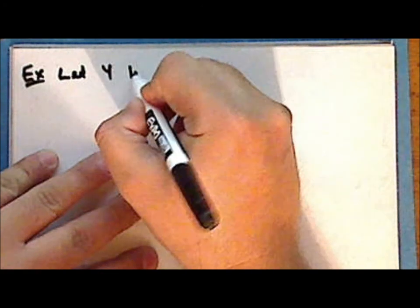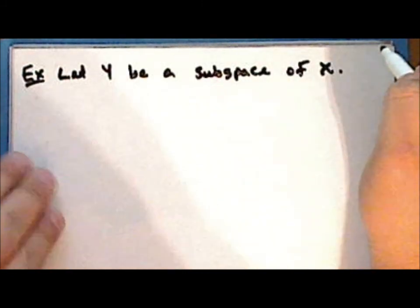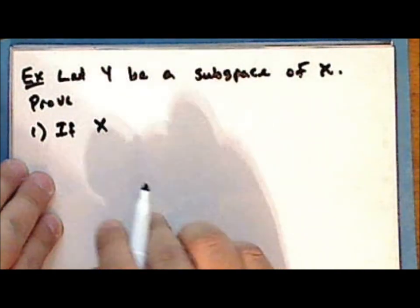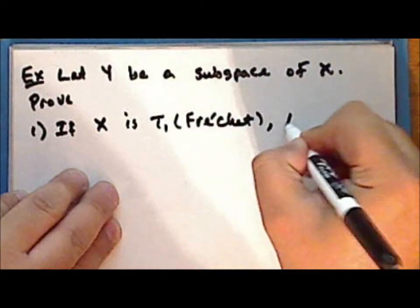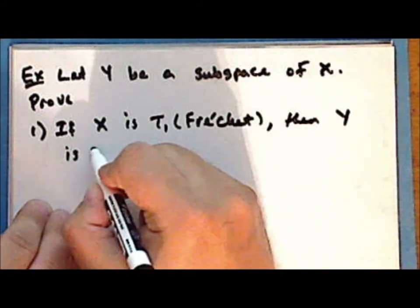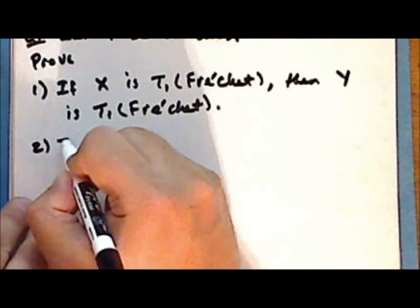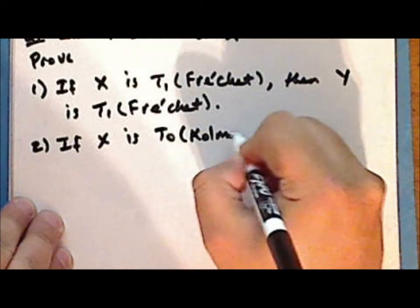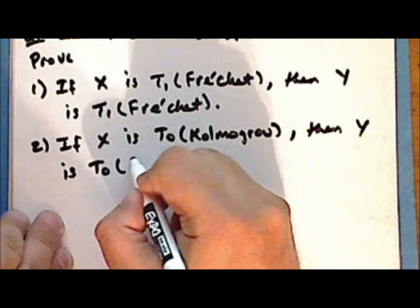As an exercise, let Y be a subspace of a space X. Prove that if the ambient space X is T1 or Fréchet, then the subspace Y is also T1 or Fréchet, and if the ambient space is T0 or Kolmogorov, then the subspace Y is T0 or Kolmogorov.